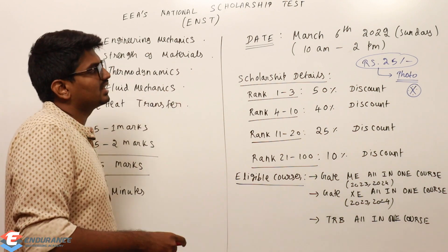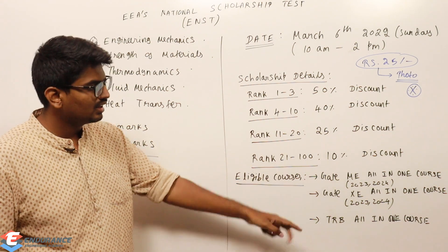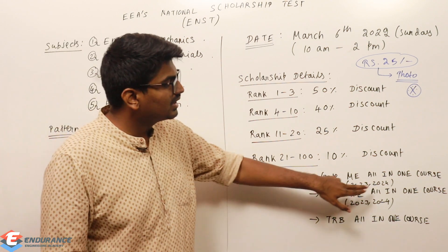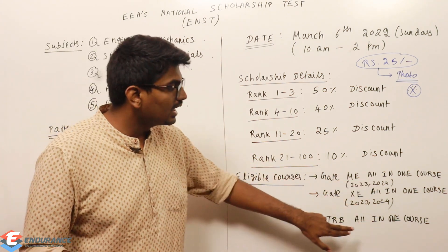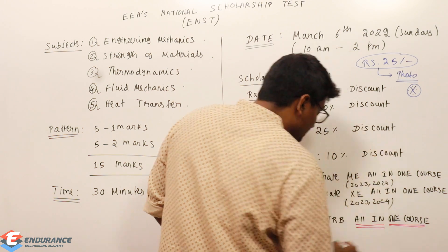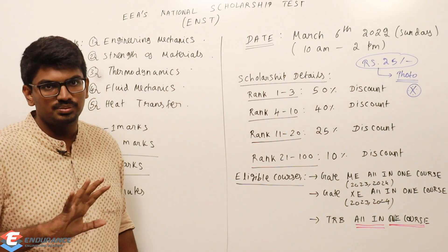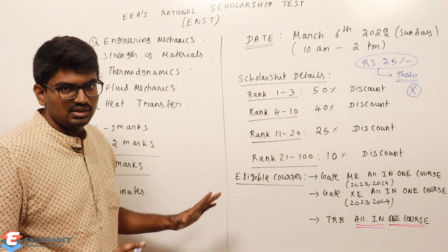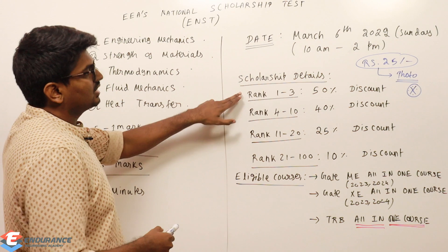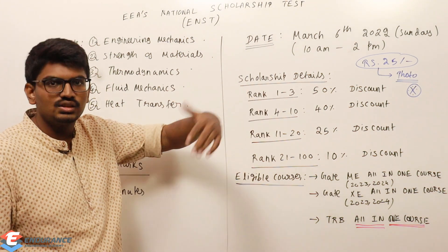For scholarship details: the first rank gets a 50% discount. This applies to any one course — ME course, XE course, or TRB course. ME plus XE is a separate combined course. You can get ME 2023 or 2024, XE 2023 or 2024, or TRB all-in-one course. Note that the TRB video course is NOT eligible for this scholarship test — only the TRB all-in-one course is eligible, along with subject courses. So the eligible courses are the 2023 and 2024 all-in-one courses for ME, XE, and TRB. The first three ranks receive 50% discount — so a 10,000 rupee fee becomes 5,000, a 20,000 fee becomes 10,000, and a 16,000 fee becomes 8,000.